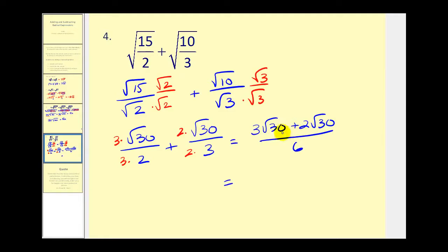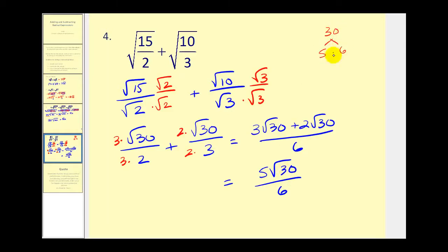One more step: three square root of 30 plus two square root of 30 would be five square roots of 30, divided by six. Just in case you were wondering, the square root of 30 does not simplify — that would be five times six and two times three. 30 does not have any perfect square factors, so that's our final answer.